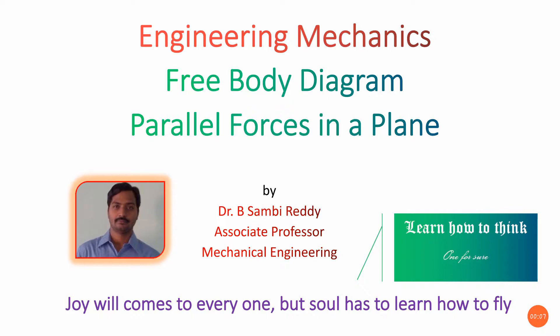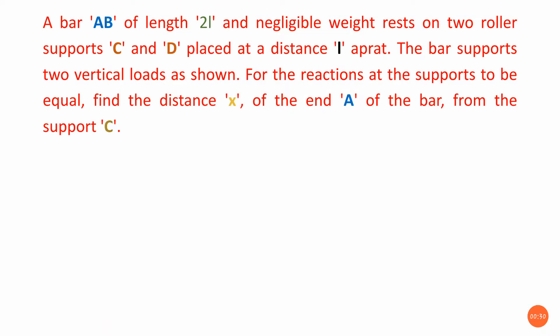In this video lecture we are learning what is the free body diagram for the parallel forces in a plane. As we know, parallel forces — when we take their lines of action — are not going to intersect anywhere; they maintain the same distance between the two forces throughout. Here I have taken one problem: a bar AB of length 2L and negligible weight rests on two roller supports C and D placed at a distance L apart. The bar supports two vertical loads as shown. For the reactions at the supports to be equal — that means RC and RD are going to be equal — find the distance X of end A of the bar from support C.